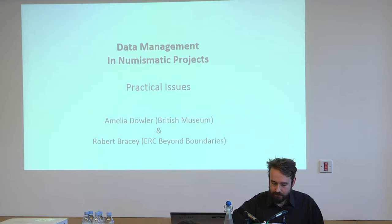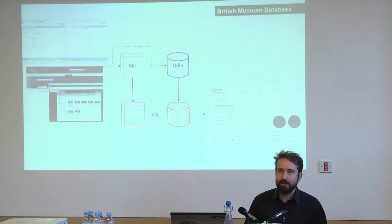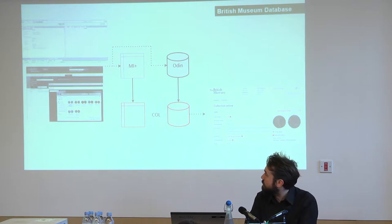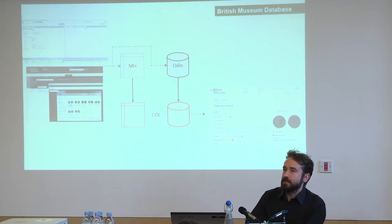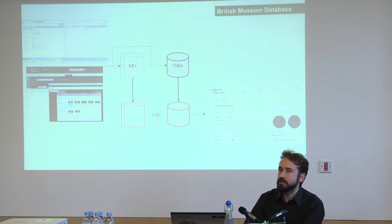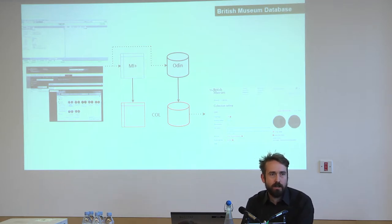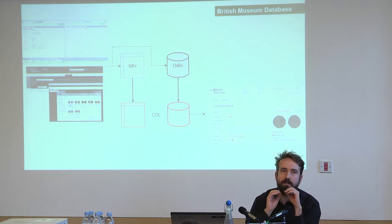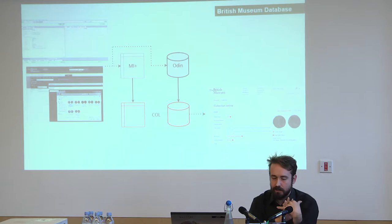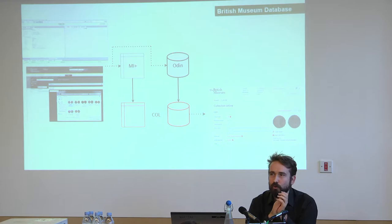I'll first begin by introducing the British Museum's database, the one I've primarily worked with during the project. The database consists of four different parts. There's a database for managing metadata associated with objects, which was once called Magus, then Merlin, and is now called MI Plus.